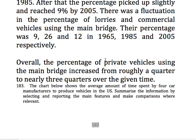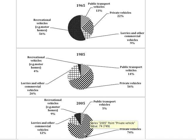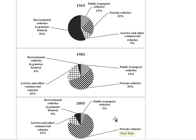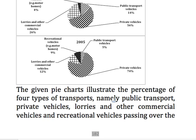Overall, the percentage of private vehicles using the main bridge increased from roughly a quarter to nearly three quarters over the given time. This is 22%, which is roughly a quarter, and 74%, which is nearly three quarters — 75 would be exactly three quarters. Here I have used vocabulary of graphs like 'a quarter', 'three quarters', and 'over a half' — for example, 56% is over a half. You can incorporate this vocabulary more and it would be better to do so.